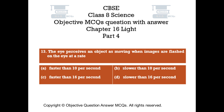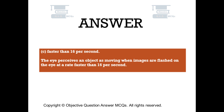Question number 13. The eye perceives an object as moving when images are flashed on the eye at a rate: Option A faster than 10 per second. Option B slower than 10 per second. Option C faster than 16 per second. Option D slower than 16 per second. The right answer is option C: faster than 16 per second. The eye perceives an object as moving when images are flashed at a rate faster than 16 per second.